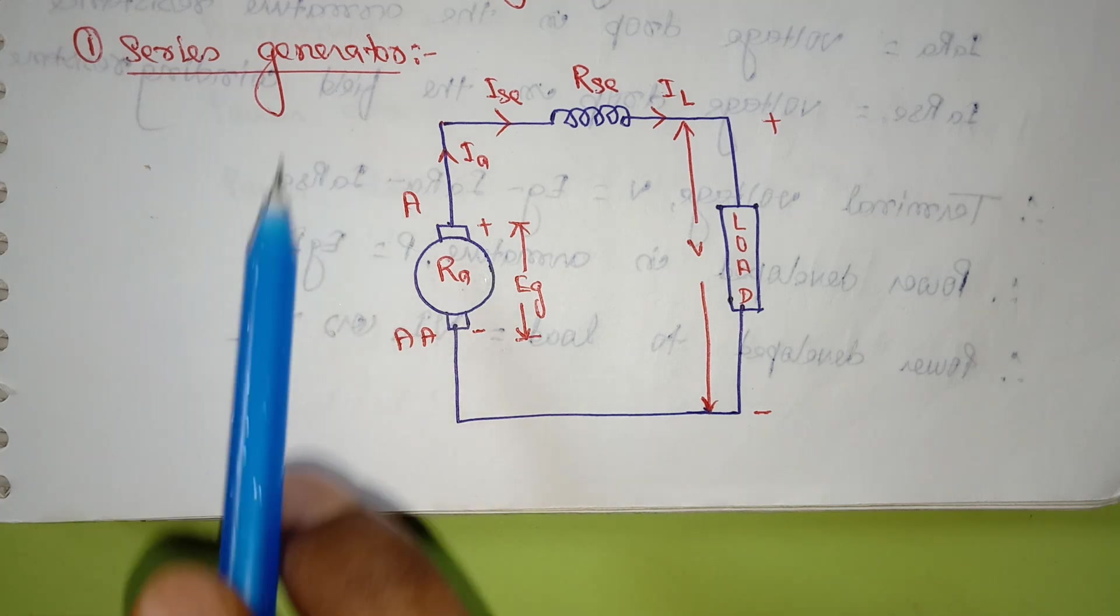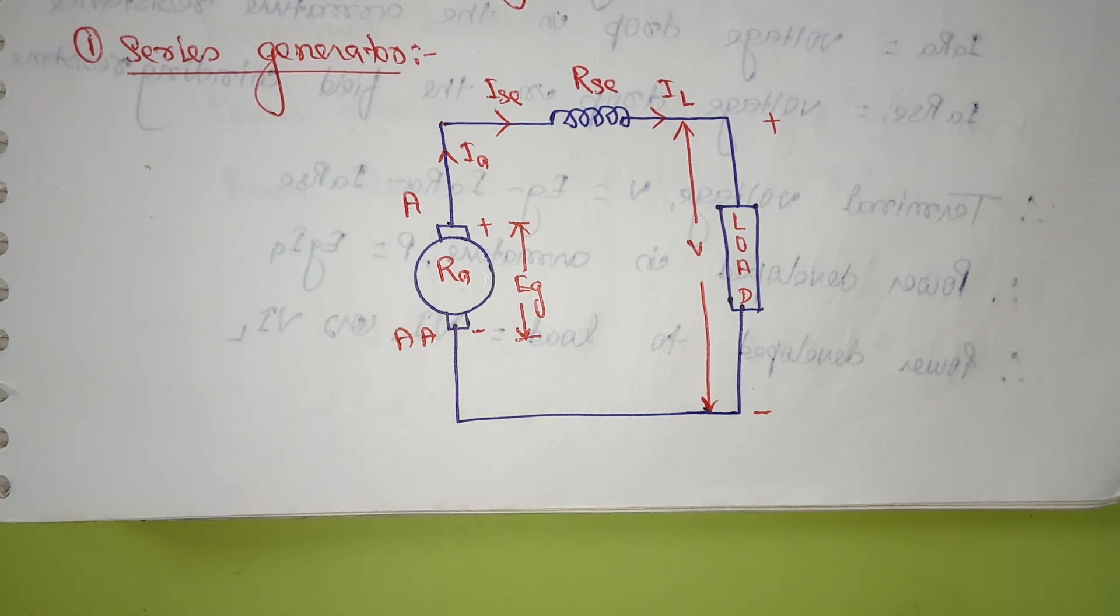This is part of the self-excited DC generators. What is self-excited? If in a DC generator, the field winding is supplied from the armature of the generator itself, then it is called the self-excited DC generator.